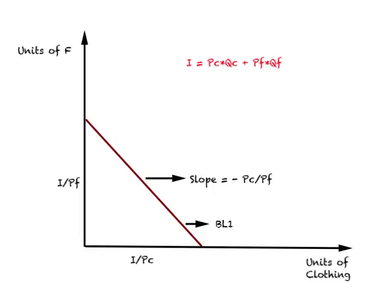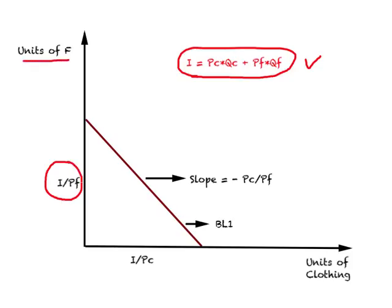A quick recap of the budget line or budget constraint: this person saves or borrows nothing, and hence income must equal total expenditure on clothing and food. In this equation, income and prices are known; what is unknown is the quantity of clothing and food. The intercept on the vertical axis, with food on that axis, is income divided by price of food. The intercept on the horizontal axis, with clothing on that axis, is income divided by the price of clothing.